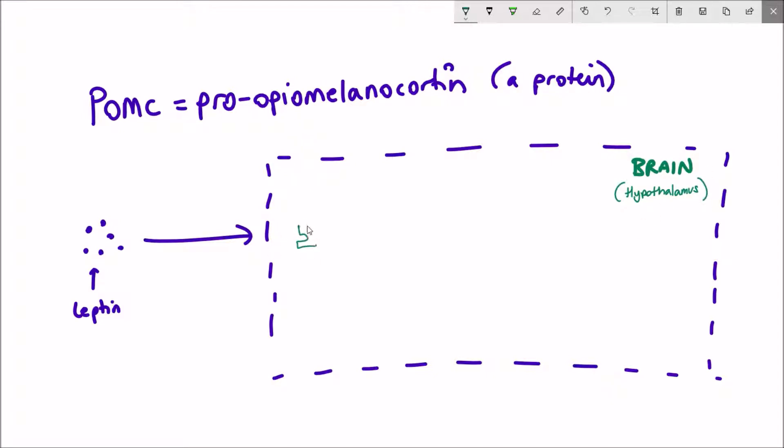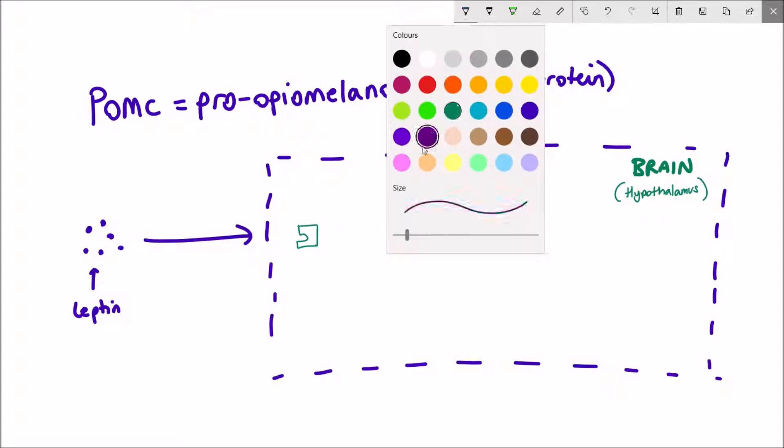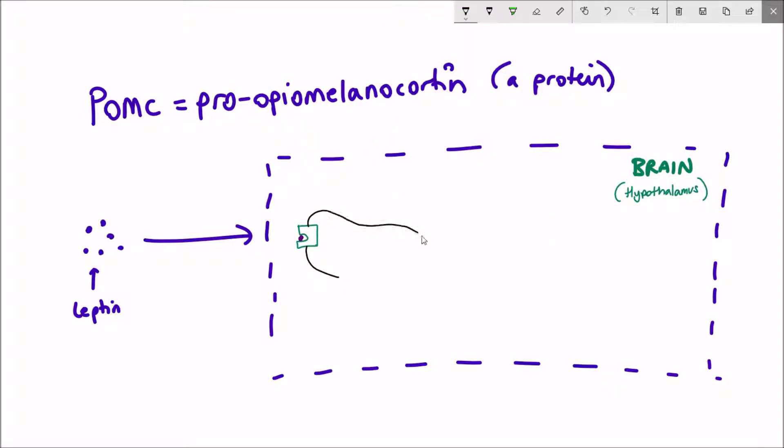These POMC neurons are in the hypothalamus, which is a region of the brain. To be more specific, it's in the arcuate nucleus of the hypothalamus. When you have leptin, you increase POMC expression and then downstream of that, you prevent food intake and promote energy expenditure.